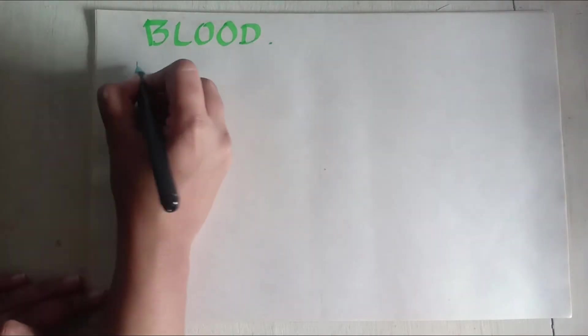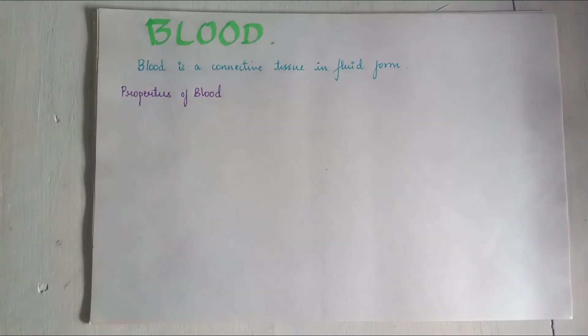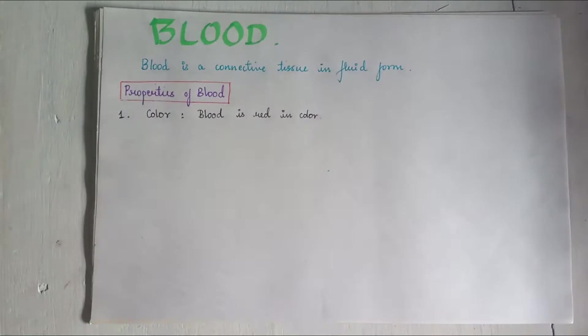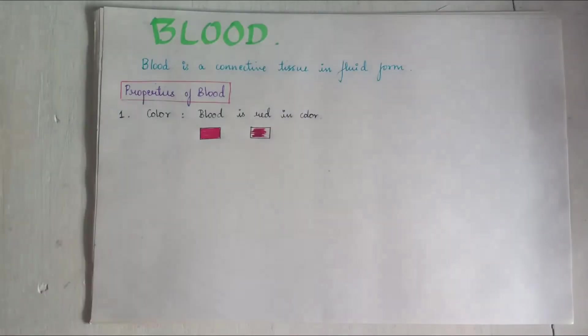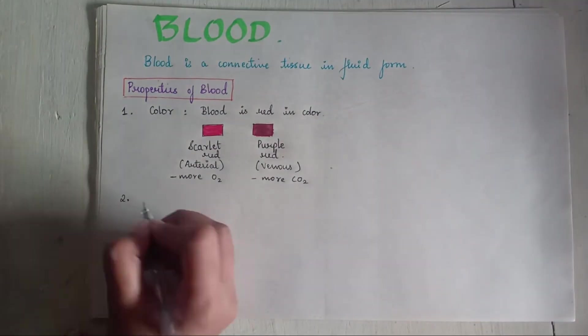The topic is blood. Blood is a connective tissue in fluid form. Properties of blood: First one is the color. Blood is red in color. Arterial blood is scarlet red because it contains more oxygen and venous blood is purple red because of more carbon dioxide.